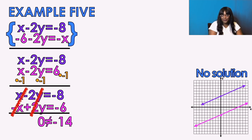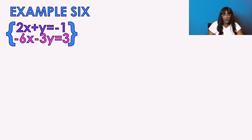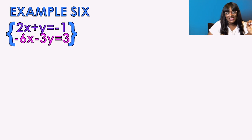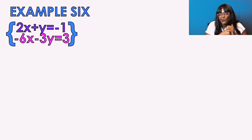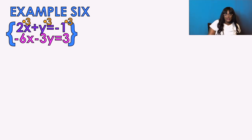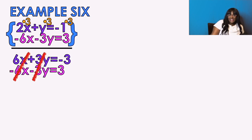Example number six — I choose x's again and multiply the top equation by 3 to get positive 6x, matching the bottom's positive 6x as opposites. But now both the x's and the y's cancel, and I get 0 equals 0. That's a true statement, which means infinitely many solutions. True statement equals infinitely many solutions.